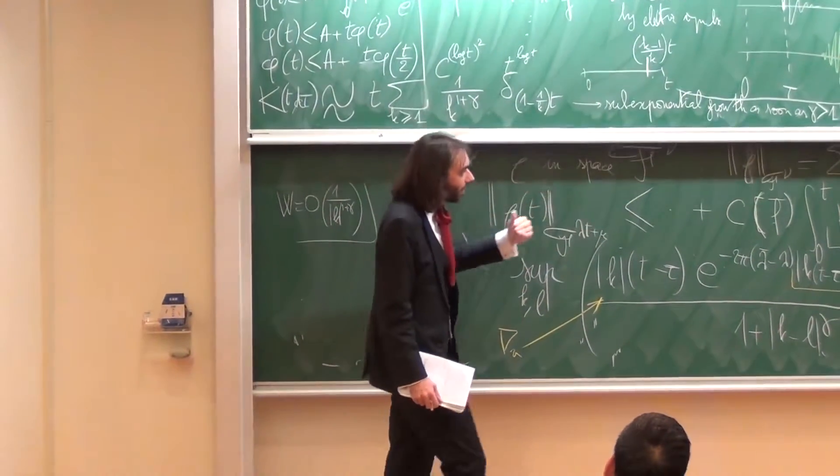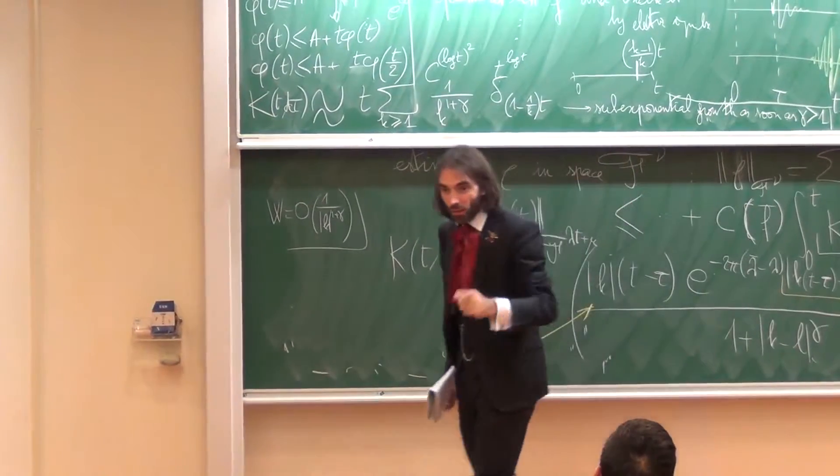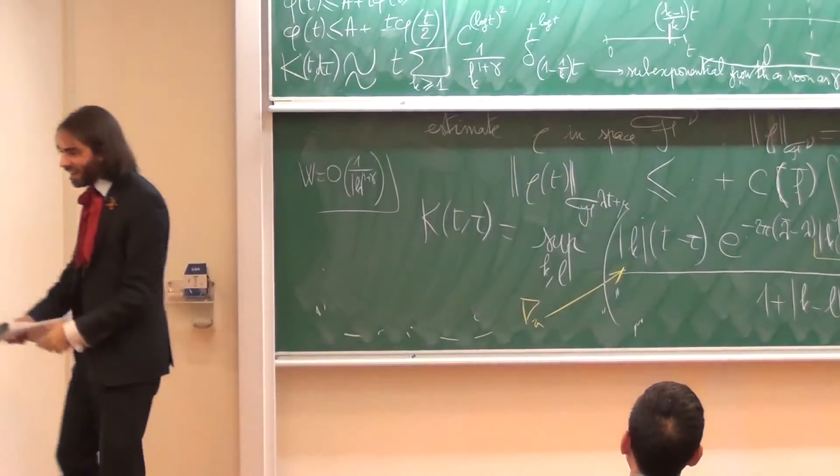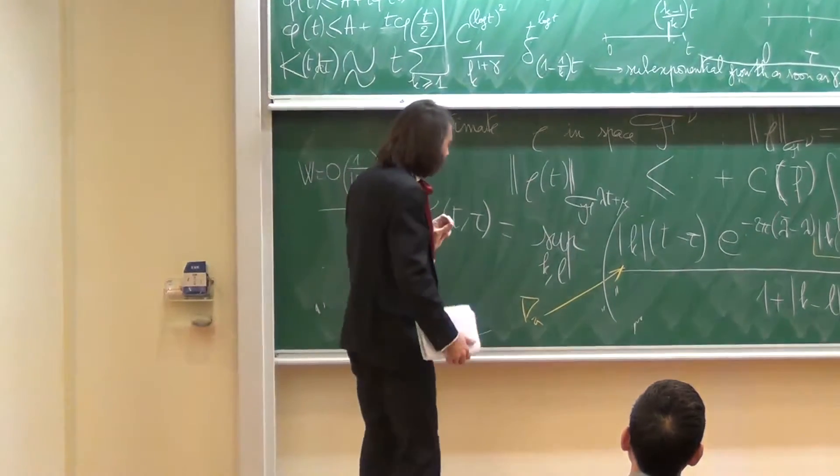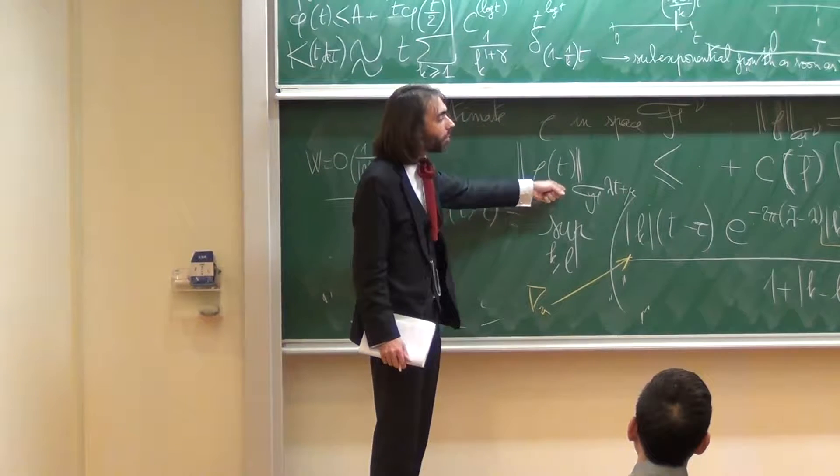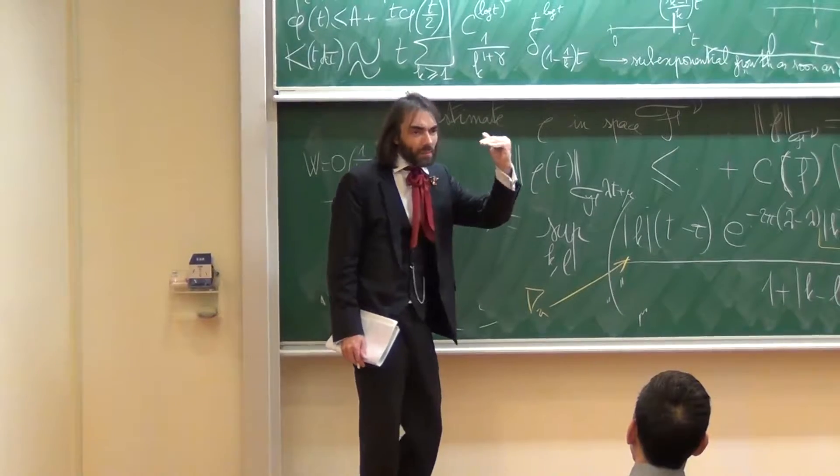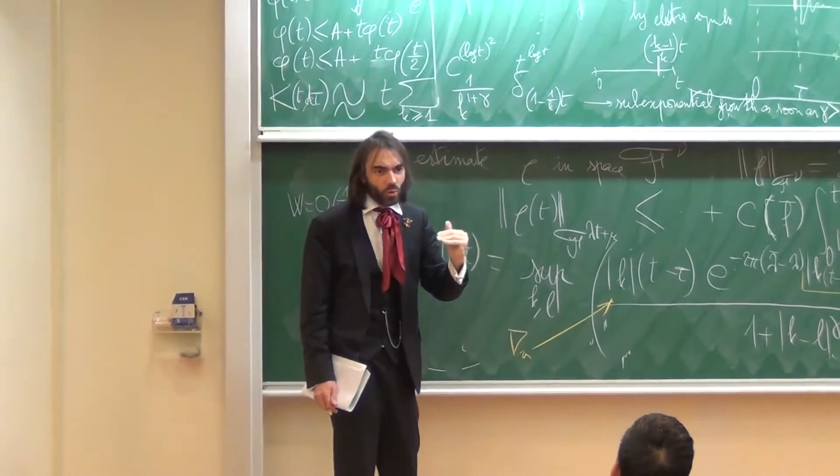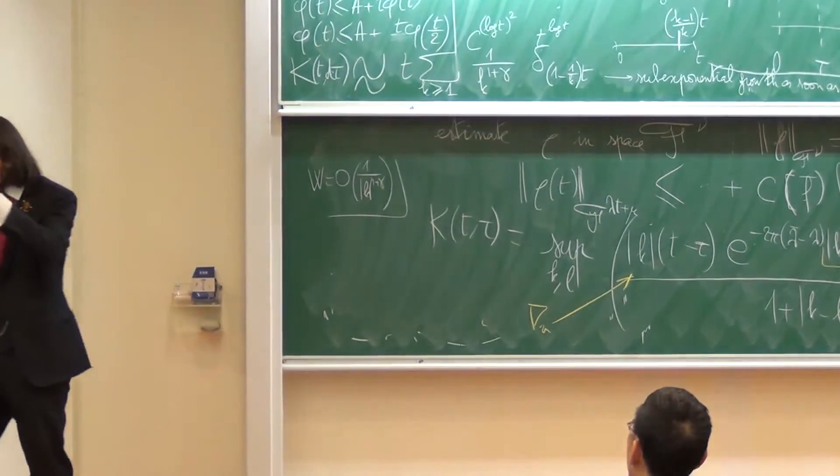But now when you look at this, you see that it misses the most important case, gamma equals 1. So you need a more refined analysis. The refined analysis will come from not trying to estimate the norm at once, but separating the different modes and estimate them as a system, as a coupled system.